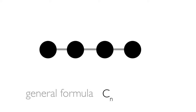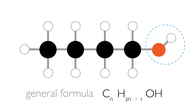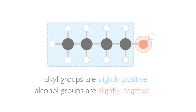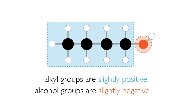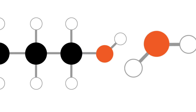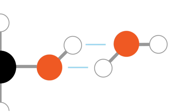The general formula of the alcohols is CnH2n+1OH. The OH group generally makes alcohols polar molecules. The hydroxyl group also gives rise to hydrogen bonding.